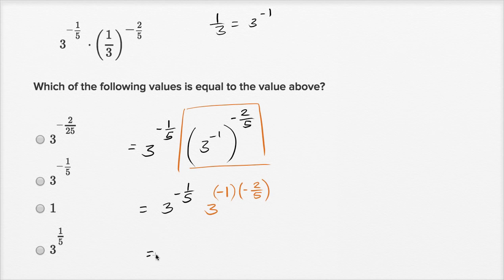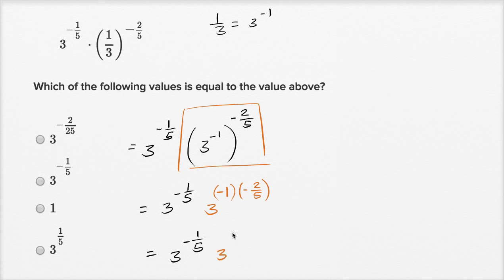This over here is still going to be three to the negative one-fifth. So this is going to be equal to three to the negative one-fifth times — now negative one times negative two-fifths — that's going to be positive two-fifths. So times three to the two-fifths. Now we have a situation where we have the same base.